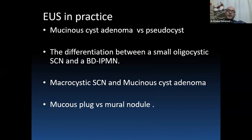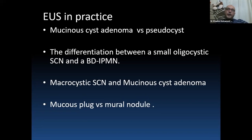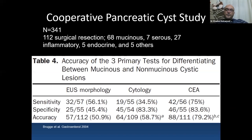In EOS practice, some limitations exist in differentiating mucinous cystic adenocarcinoma from pseudocyst, especially when there is no clear history of pancreatitis and the lesion has a large macrocystic component. There are also difficulties differentiating serous cystic neoplasm from branch duct IPMN, macrocystic serous cystic neoplasm from mucinous cystadenoma, and mucous plug from a mural nodule, especially without contrast-enhanced ultrasound.